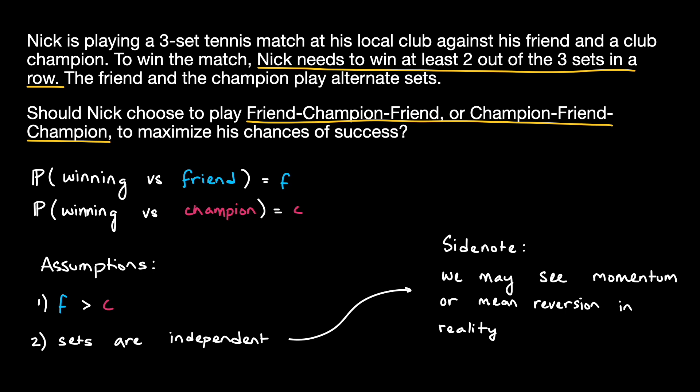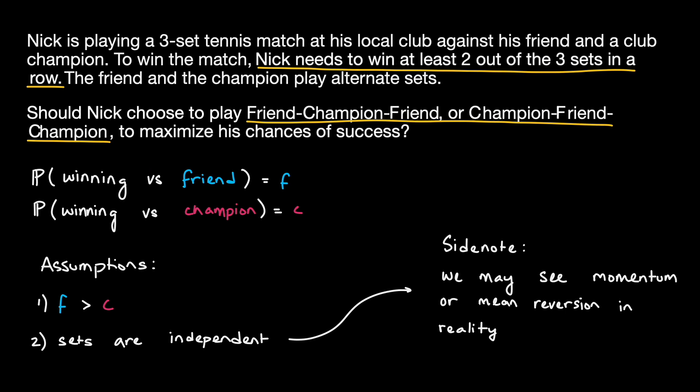In addition to sports psychology, we may also see momentum effects because of the effect of exhaustion. For example, a player with more stamina may have a higher probability of winning in later sets compared to a player with lower stamina. As you can see, the real world adds a lot of complexity, and therefore we're going to try to ignore it for now and stick with these simple assumptions.